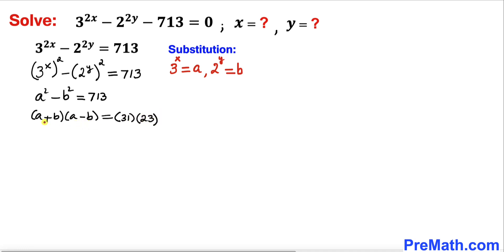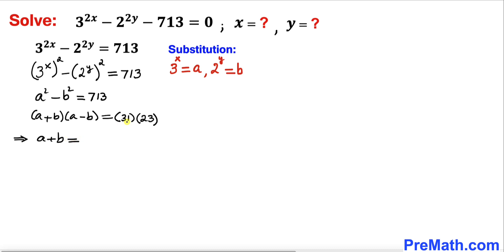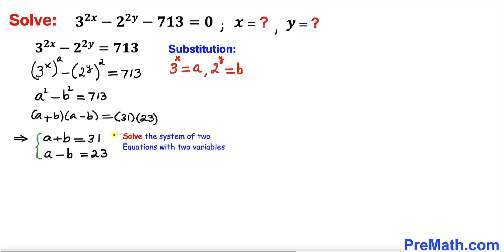Focusing on the two factors (a+b) and (a-b), we know that (a+b) is going to be the bigger number and (a-b) the smaller one. So we conclude that a plus b equals 31 and a minus b equals 23. We now have a system of two equations with two variables, which we will solve by the elimination method.